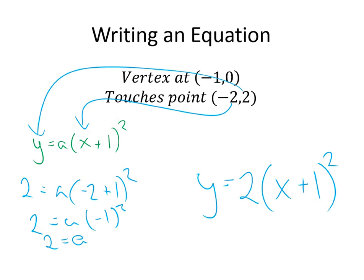So what you'll do is you'll plug in your vertex, and then your only variable that you have to find is A, so then you use that second point, plug those in for the X and Y, solve for A.